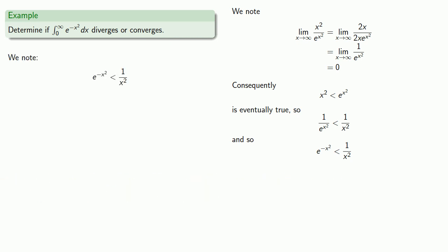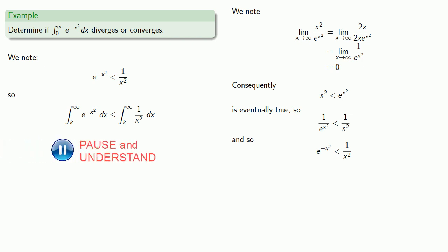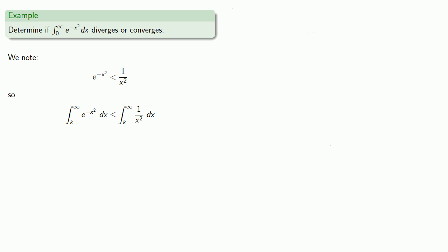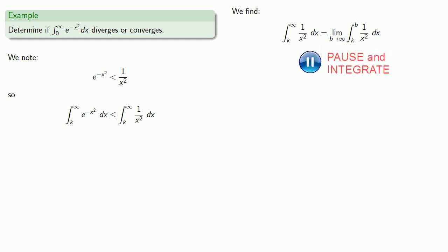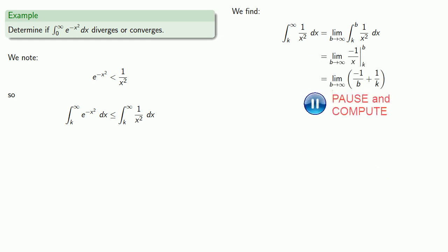So we know that the integral from k to infinity of e^(−x²) dx is less than or equal to the integral from k to infinity of 1/x² for some value k. This work is only useful if this larger integral converges, so let's check. The integral from k to infinity of 1/x² is an improper integral, equal to the limit as b goes to infinity of the integral from k to b of 1/x². We find the integral and take the limit, which is finite, so our integral converges, and therefore our smaller integral converges.